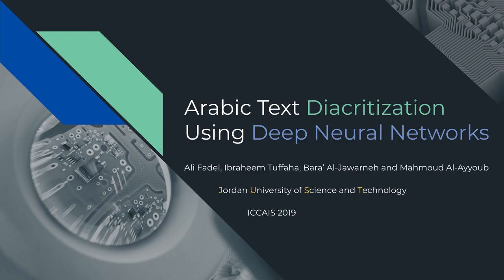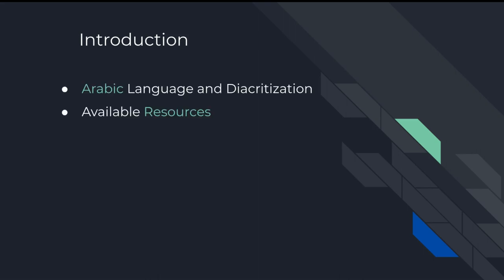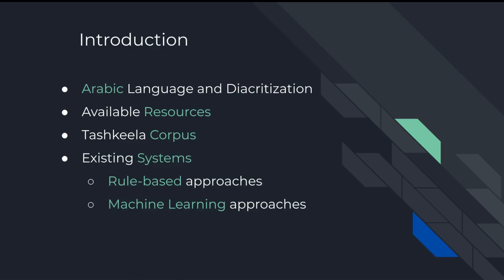Today I will talk about our work on Arabic text diacritization using deep neural networks. Why do we need diacritization and why the use of neural networks? The presentation will go as follows: first we will talk about the Arabic language and diacritization, then mention the available resources for the problem at hand, specifically Tashkila Corpus, list the existing systems and their approaches, and discuss how to measure performance of such systems. We face issues in these points and will discuss how we can overcome these problems.